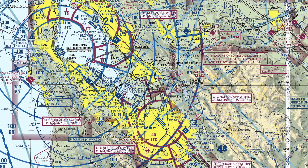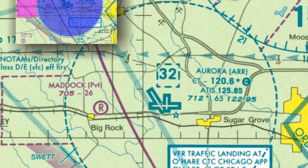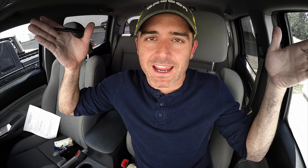Secondly, you need to understand airspace, which ties back to the sectional chart. You have class B airspace in blue, class C airspace in magenta, class D in dashed blue, and class E in dashed magenta. You have to understand how high they go, what you can do in those areas, and their shape — they're not straight down to the ground, they're kind of shaped like a cake. You also have to understand G airspace, which is where we as drone pilots can fly.